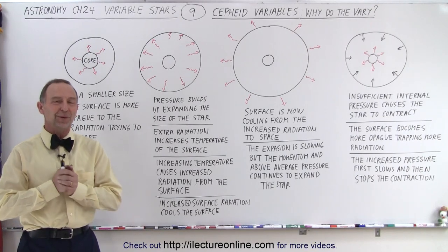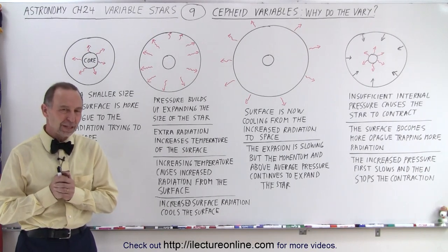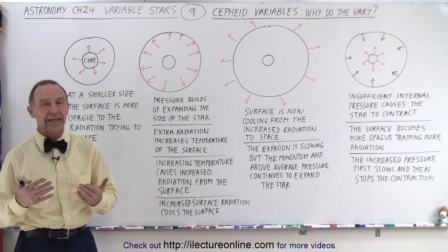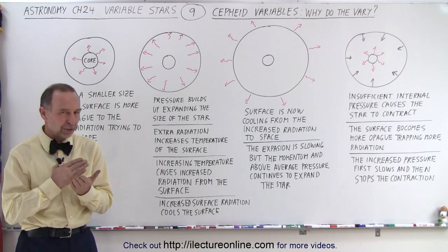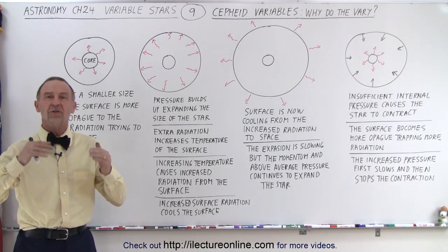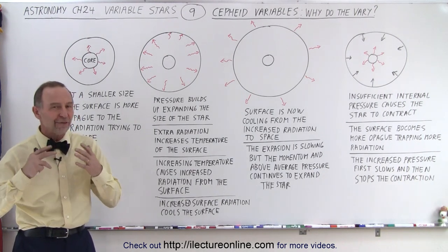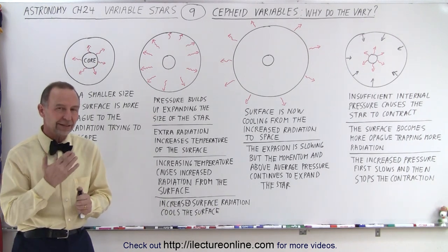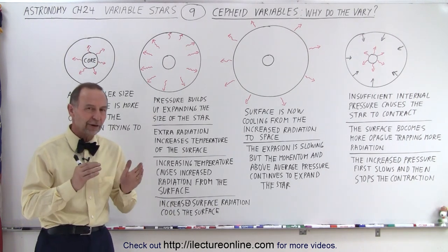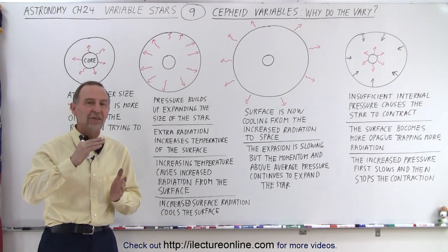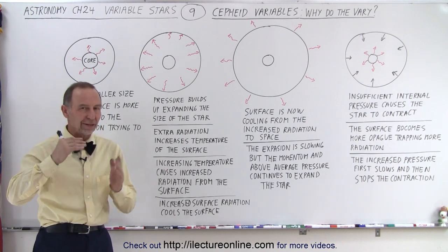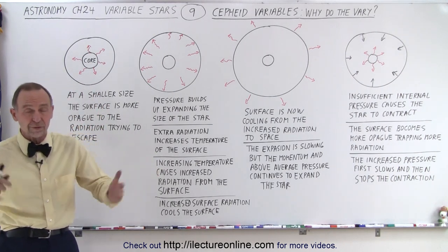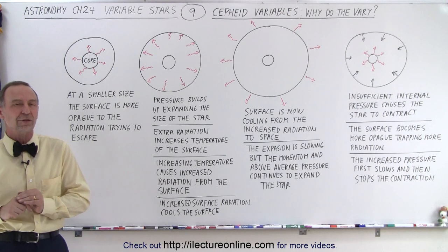Welcome to ElectronLine. So why do Cepheid variables vary, and why is their periodicity so constant? Every 5.4 days, delta Cephei in Cepheus varies in intensity from brightest to dimmest and back to brightest every 5.4 days, and it's been doing that presumably for thousands of years.